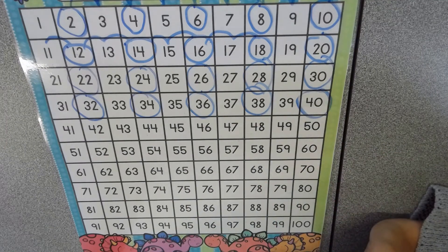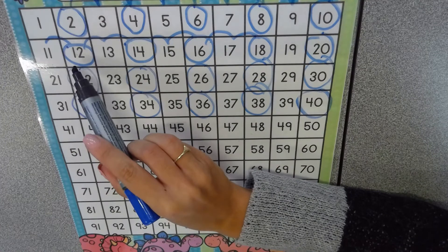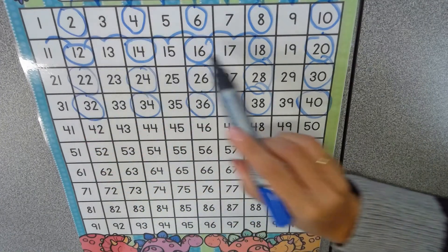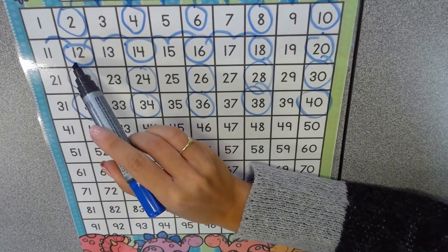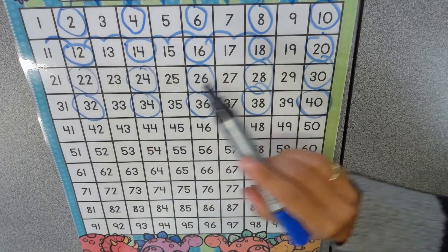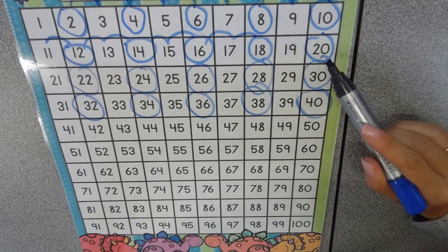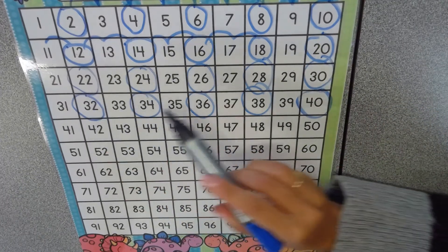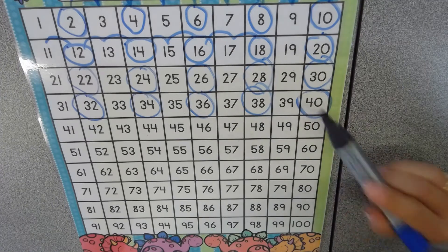The only number that changes is the one in the front, which is what we call a tens digit. This row, the tens digit is one, one, one, one, one. Then once we get to 20, the tens digit changes to two. Two, two, two, two, et cetera.